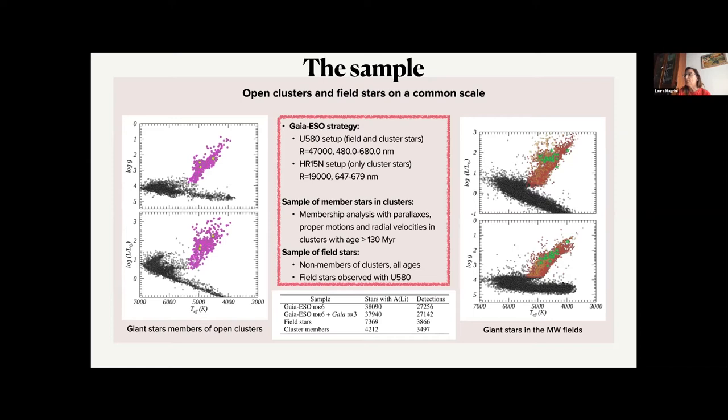The Gaia-ESO strategy is based on two resolutions, so we observed at very high resolution with UVES and at intermediate resolution with GIRAFFE, and the setup of GIRAFFE that includes the lithium abundances is only the one that observed clusters. So we take advantages of the fact that we have many non-member stars in the field of clusters to collect a sample of field stars.